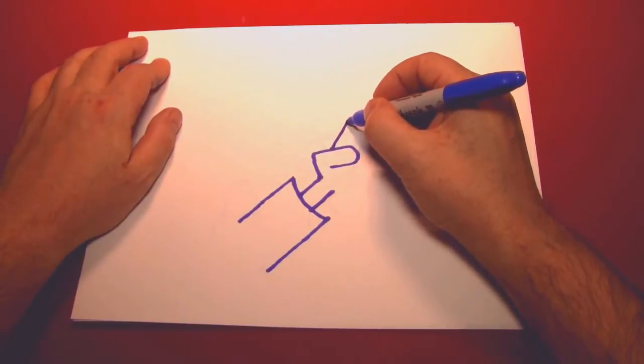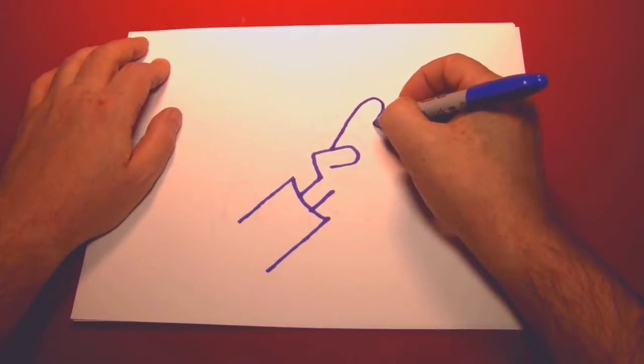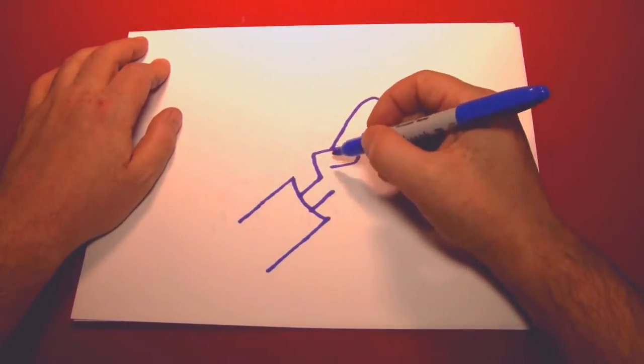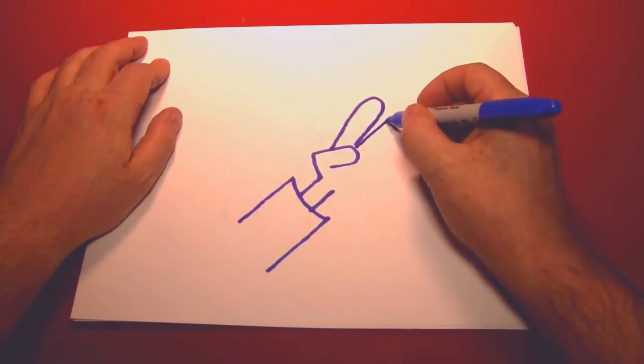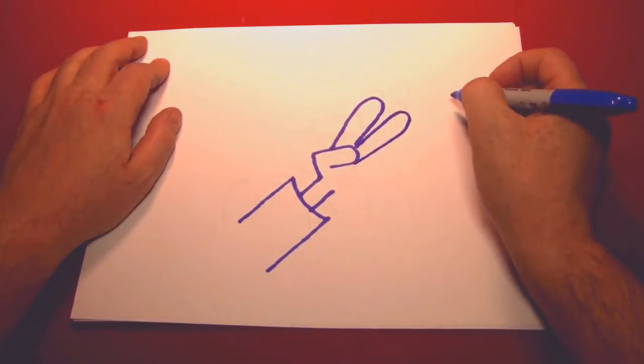So we'll start by drawing the index finger, which lines up with where the thumb bends right there. Then make the middle finger, which is just a little bit longer than the index finger like that.